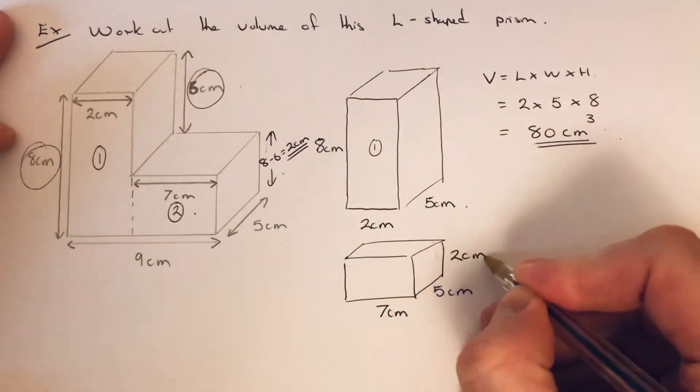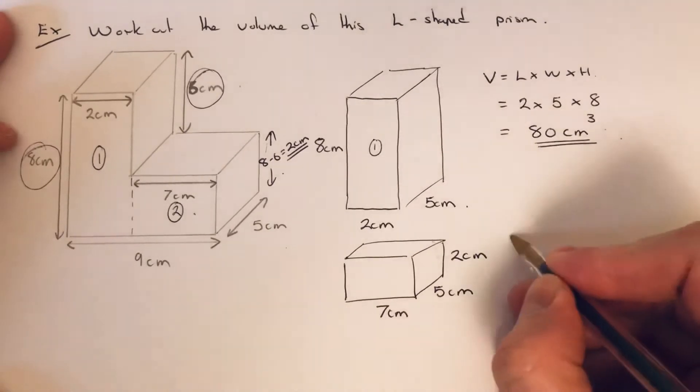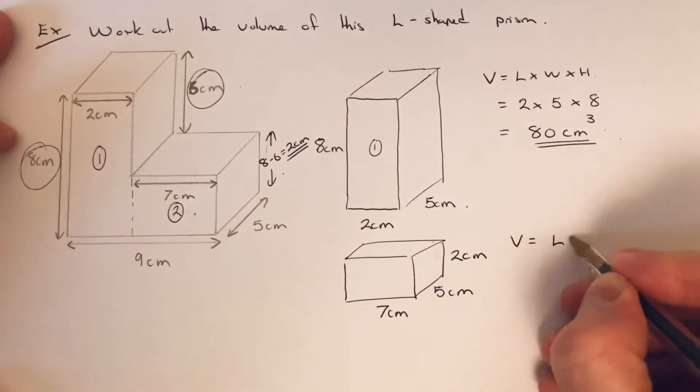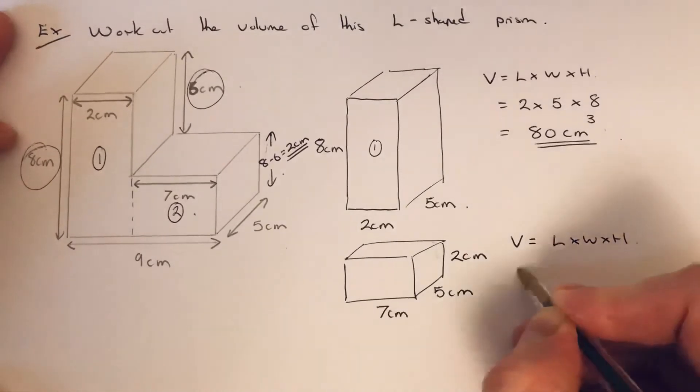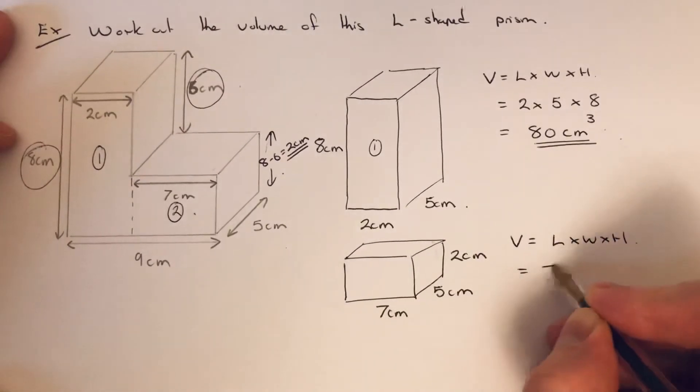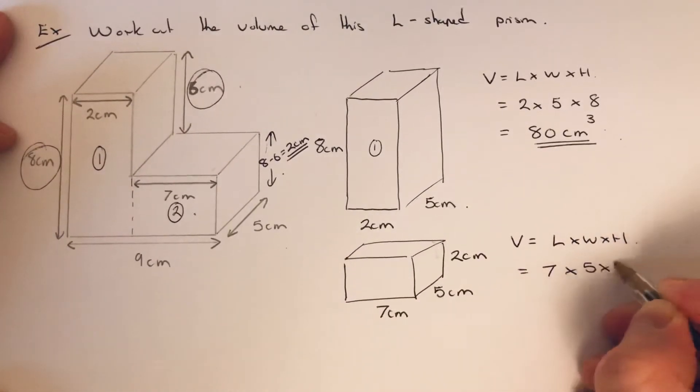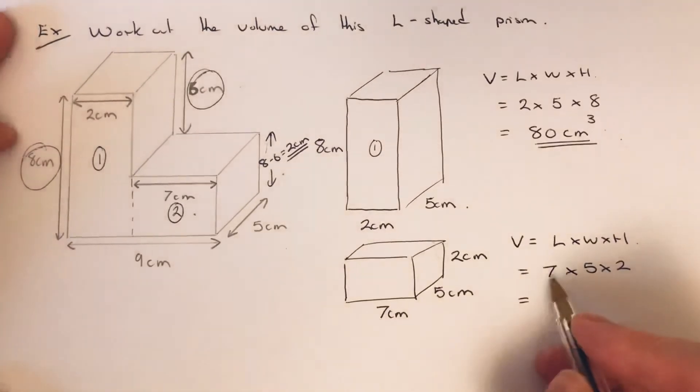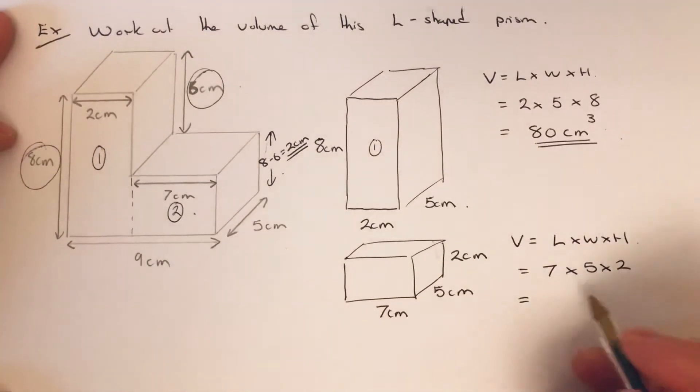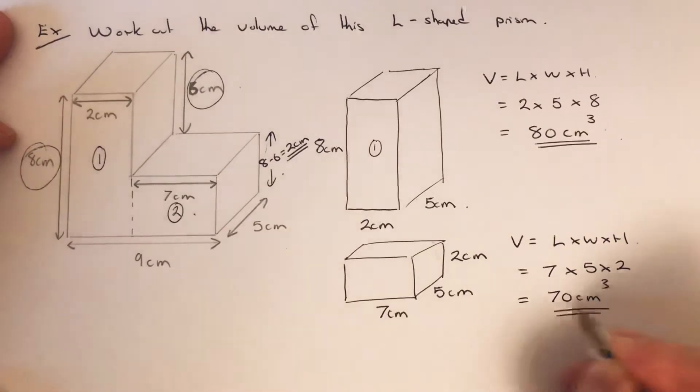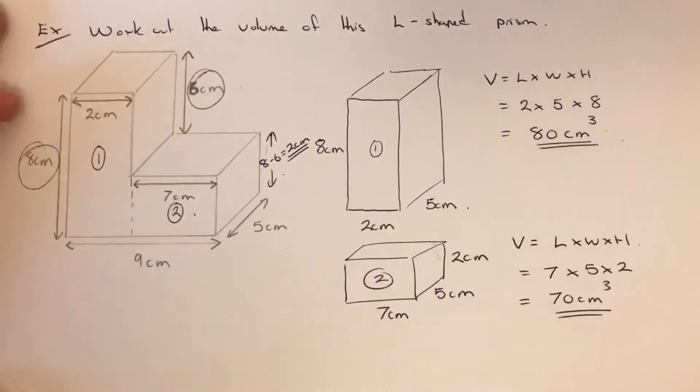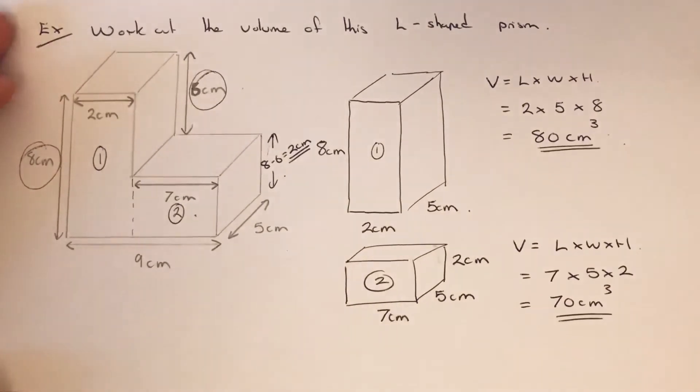So the height of this cuboid is 2. Again to get the volume we do the length times the width times the height. The length is 7, the width is 5, the height is 2. So 7 times 5 is 35, 35 times 2 is 70.